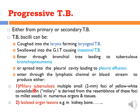Miliary tuberculosis takes its name from millet seeds. The infection to organs usually develops as multiple small yellow-white nodules approximately two millimeters in size.